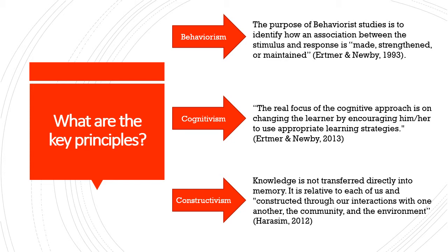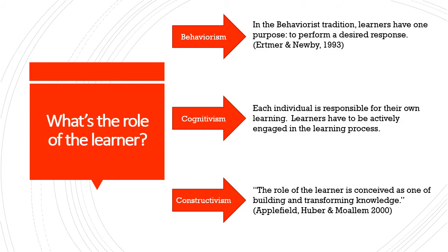Cognitivism and Constructivism look at thought, which is ignored by Behaviorists. The role of the learner is different according to each learning theory. In the Behaviorist tradition, learners have one purpose: to perform a desired response. In Cognitivism, each individual is responsible for their own learning and learners have to be actively engaged in the learning process. A Constructivist learner creates knowledge together with the teacher and other learners. Learners are not passive receptors of knowledge — they are in control of the learning experience, manipulating, interpreting, and elaborating on information according to their own context.